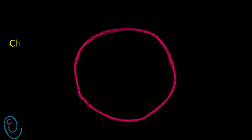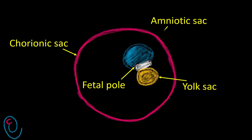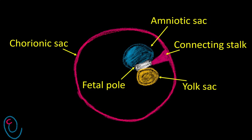A few days after implantation, the newly formed conceptus consists of a single cavity called the chorionic sac. The fetal pole is surrounded by two cavities — the yolk sac and amniotic sac — and they are attached to one side of the chorionic sac through the connecting stalk.